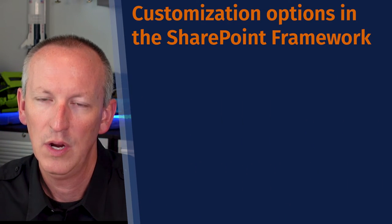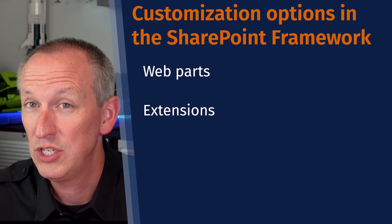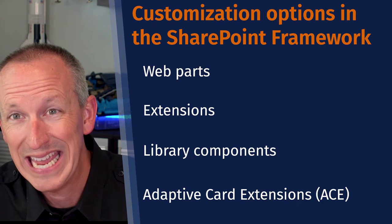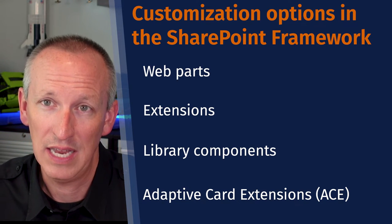Now let's talk about what you can actually build with the SharePoint Framework. SharePoint Framework provides developers with a few different types of things they can build: web parts, extensions, library components, and adaptive card extensions — or ACEs — if you're extending Viva Connections. Some of these include additional subtypes of components. Let's start by looking at web parts.